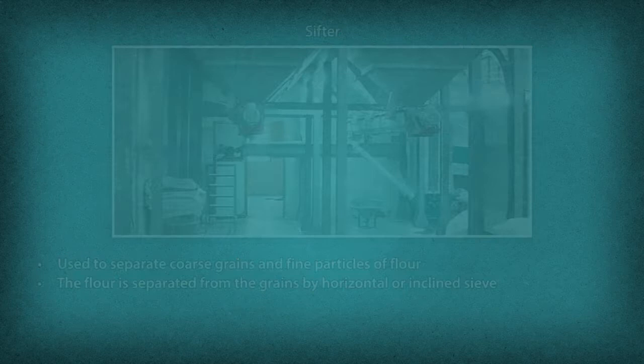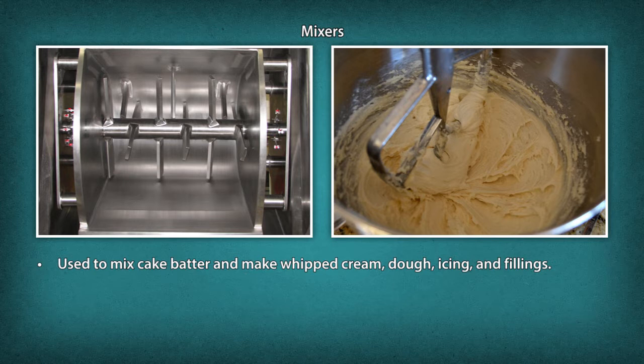Mixers: It is used to mix cake batter and make whipped cream, dough, icing and fillings. There are two types of bakery mixers: planetary and spiral. A planetary mixer's mixing arm is set in a planetary motion without motion of the bowl and is used for all products.